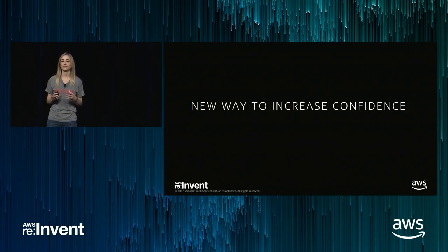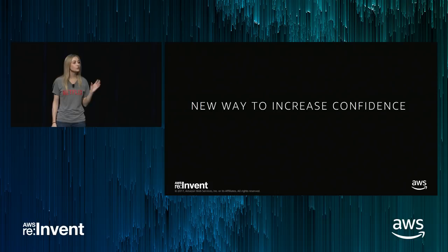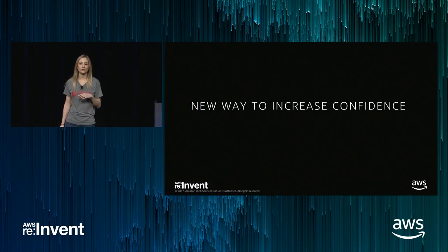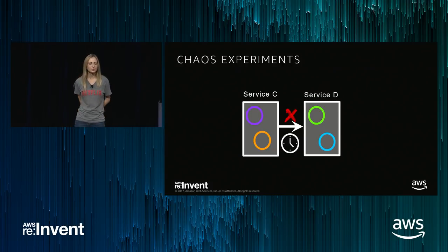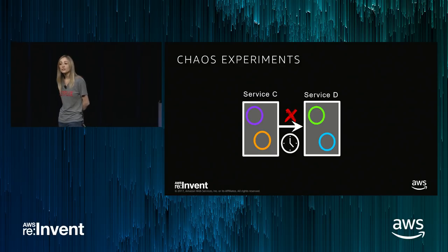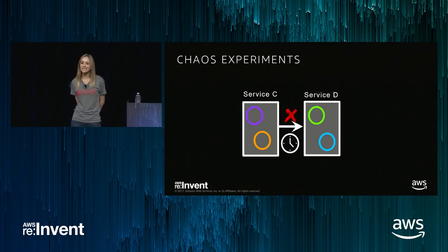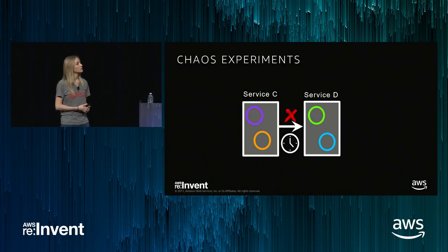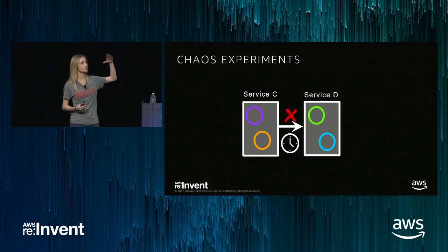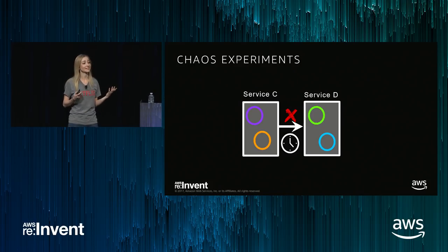My colleague Haley Tucker argues that both sides of the equation are needed — the integration and unit testing side and also the chaos engineering side. One is not meant to replace the other. Chaos experiments look a lot like the integration testing diagram, except we call these experiments because with chaos, we're not testing knowns — we're looking at unknowns. So it's not a test anymore, it's an experiment. With chaos experiments, we can fail calls from service C to service D, or we can add latency to them.